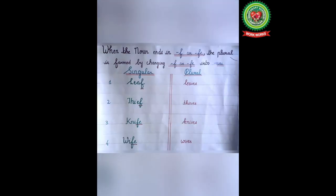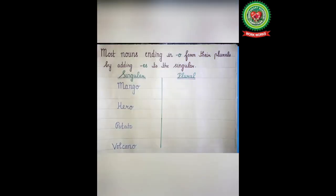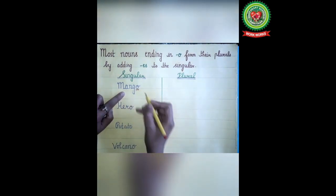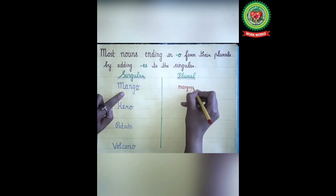Children, you have seen that when the noun ends in F or FE, the plural is formed by changing F or FE into VES. Now we will discuss the next rule: most nouns ending in O form their plurals by adding ES to the singular. For example, 'mango' ends with O, so we add ES: mangoes.